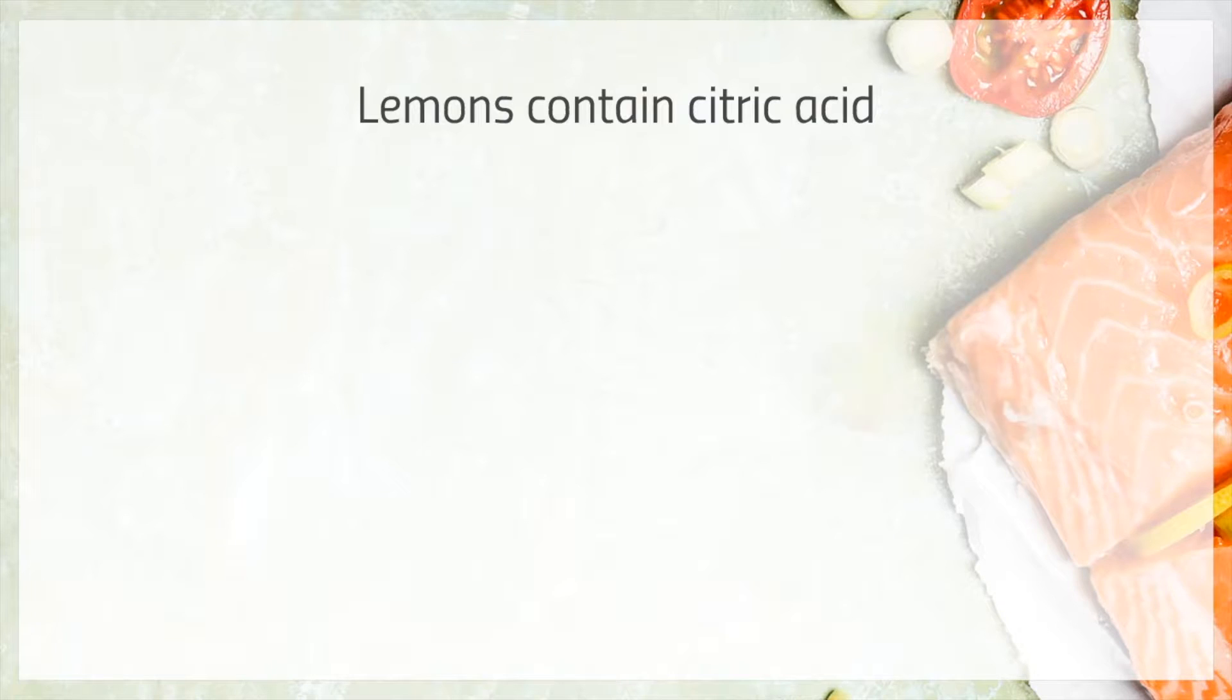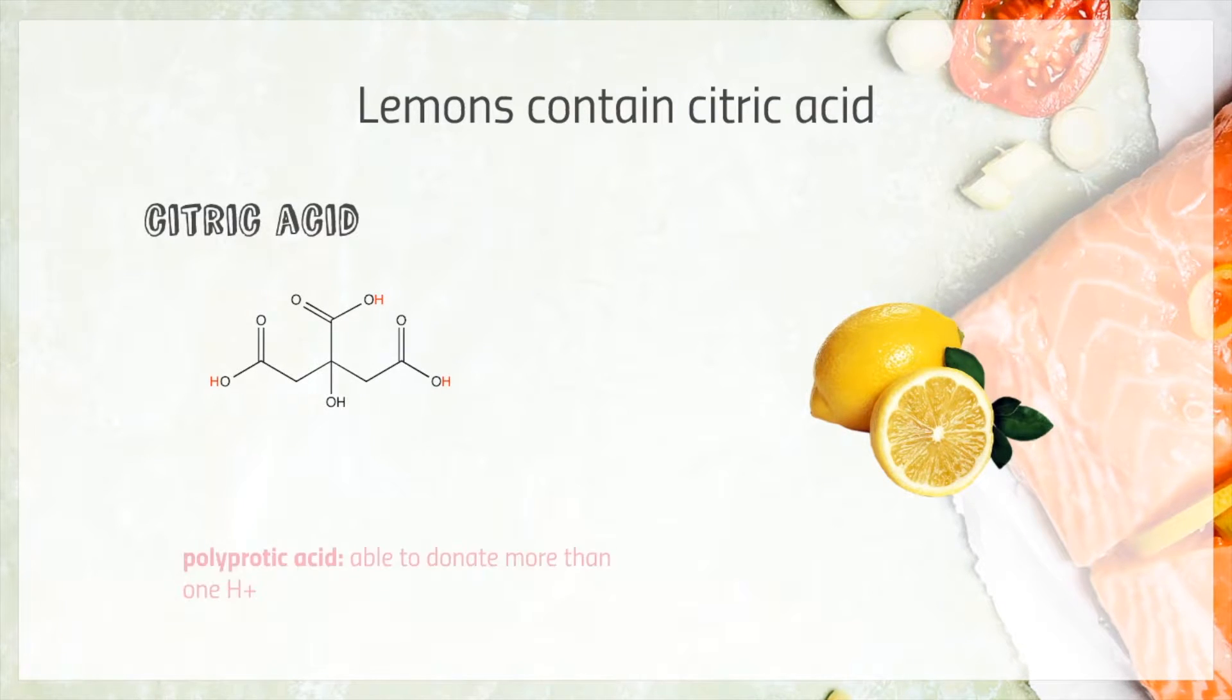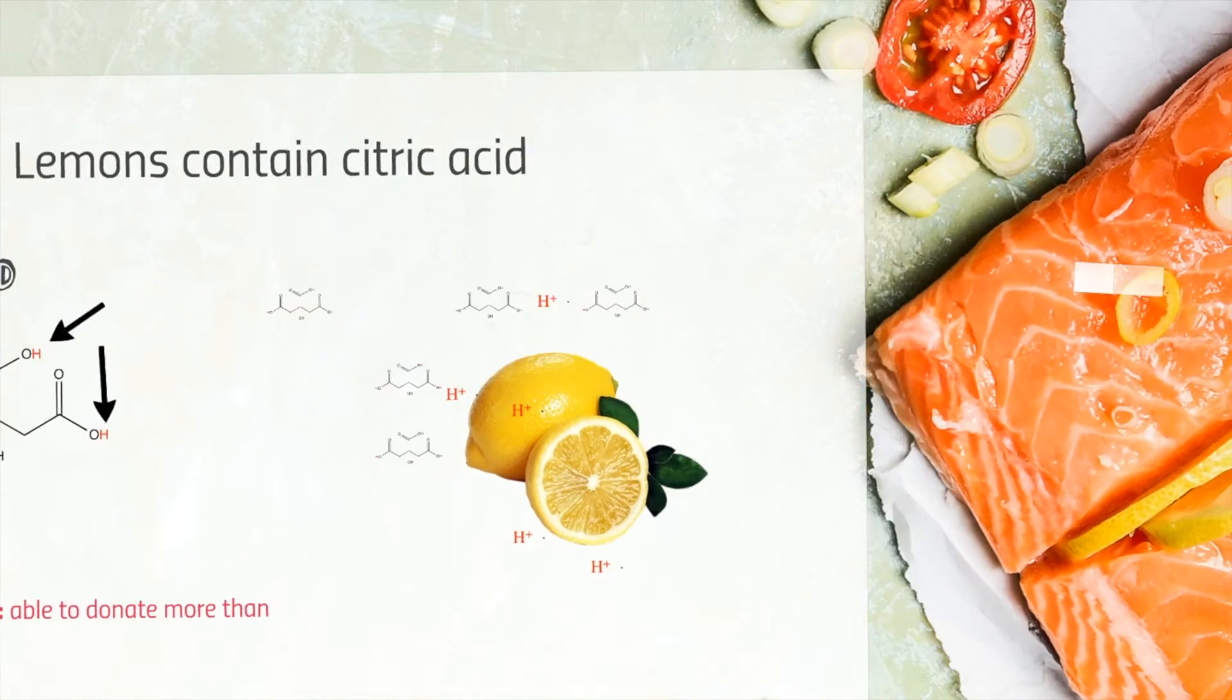Lemons, on the other hand, contain a weak acid called citric acid. Citric acid is a polyprotic acid which is able to donate more than one proton in solution, in fact, up to three. In this video, we're only going to focus on one of the protons that citric acid donates, but if you want to learn more about polyprotic acids, you can watch our video on PKA.